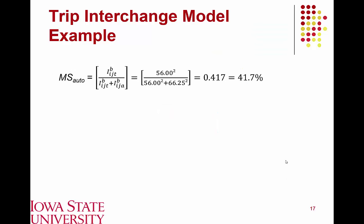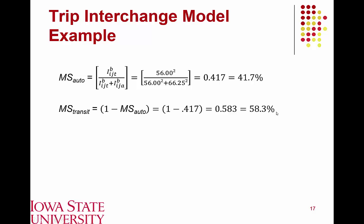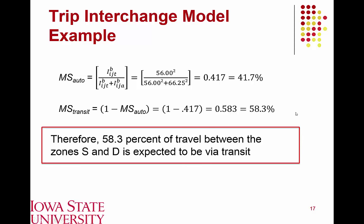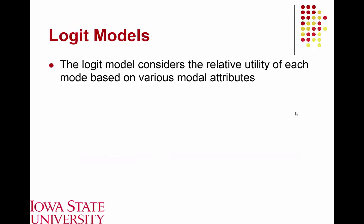To determine actual mode share, we take the impedance factor for transit to the second power (the calibrated exponent). The auto mode share is the ratio of transit impedance squared over the sum of transit and auto impedance squared. This yields 41.7% for auto and, by back-calculation, 58.3% for transit. That is the transit mode share between zones S and D. The trip interchange model essentially compares alternatives in terms of their equivalent travel times.